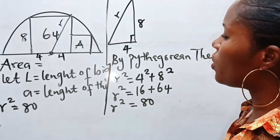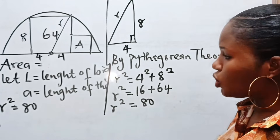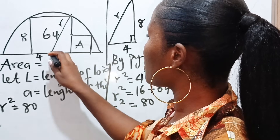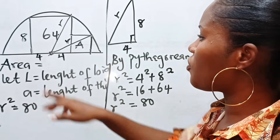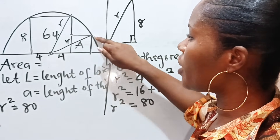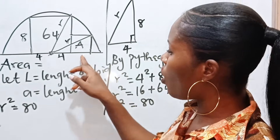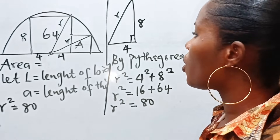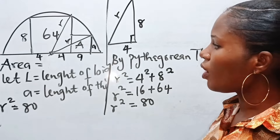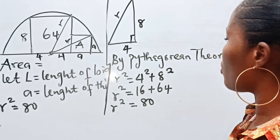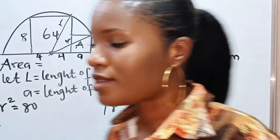Looking at the diagram again, if we draw a line from the center of the circle to touch this other point on the circumference, this is also a radius. Remember we said let A be the length of the smaller square, so this side is A and this side is A as well. Let us draw out this particular right-angle triangle.